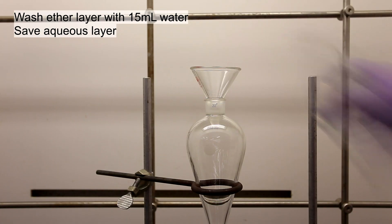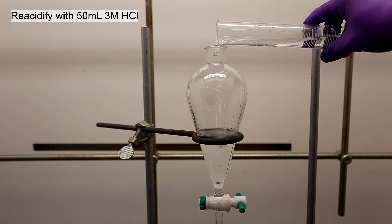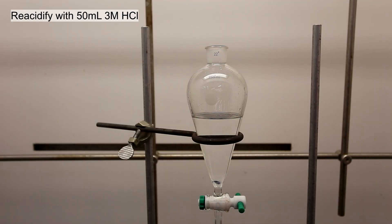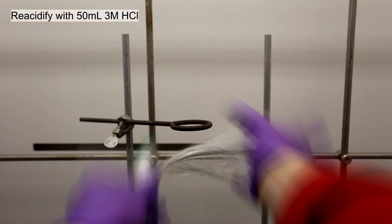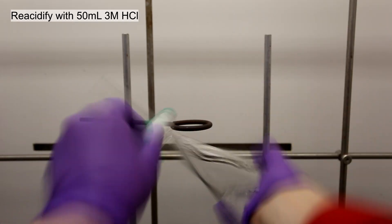The aqueous layers are then added back to the separatory funnel and re-acidified using 50 milliliters of 3 molar hydrochloric acid. This regenerates the ether-soluble butyric acid.